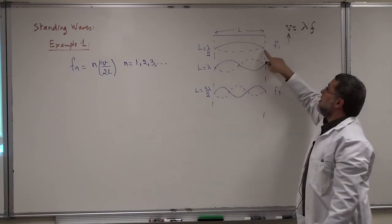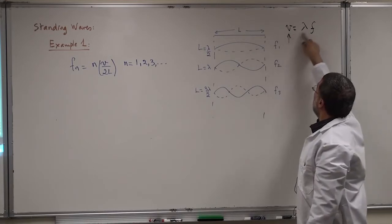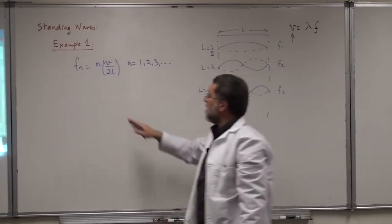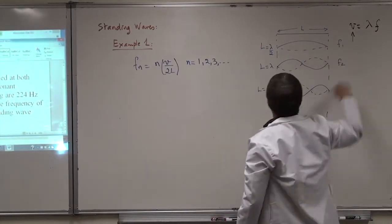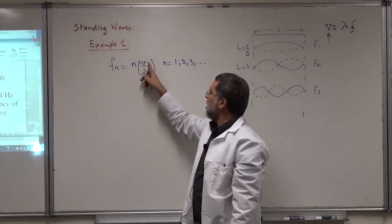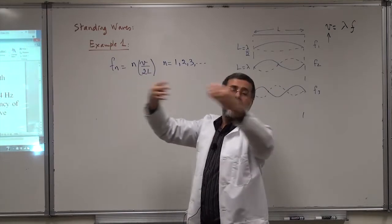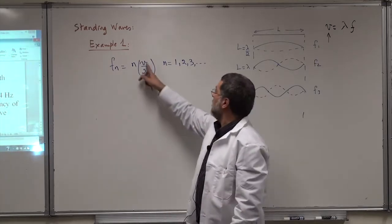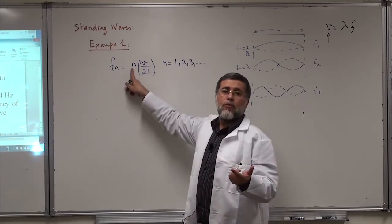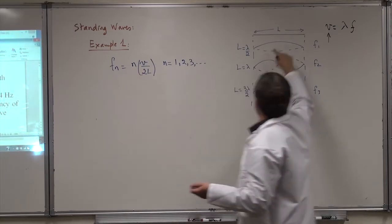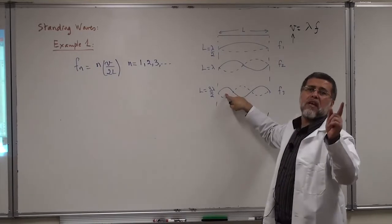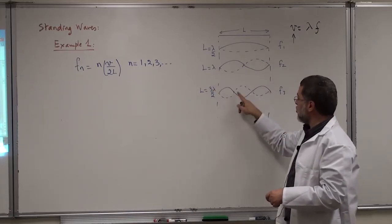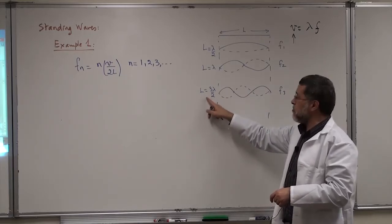The speed V of the wave in the string is constant, so as frequency increases, wavelength decreases. The resonant frequency formula is Fn = nV/2L, where V is the wave speed, L is the string length, and N is the harmonic number or number of segments. Each segment has a length of λ/2. So for N=1, λ=2L; for N=2, λ=L; for N=3, λ=2L/3, and so on.